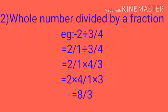Second important point: whole number divided by a fraction. Example: 2 divided by 3/4. Here 2 is a whole number and 3/4 is a fraction. Write 2 as 2/1. Now divide 2/1 by 3/4 — take the reciprocal of 3/4, which is 4/3. Change division to multiplication: 2/1 into 4/3. This equals 2 into 4 divided by 1 into 3, which equals 8/3.